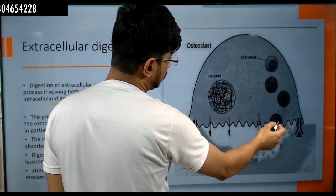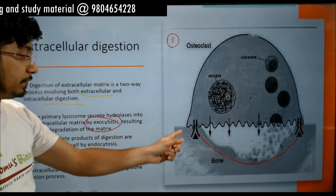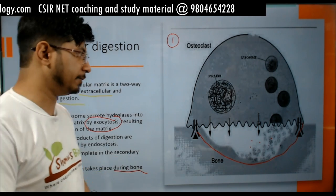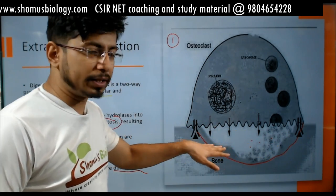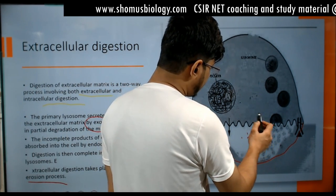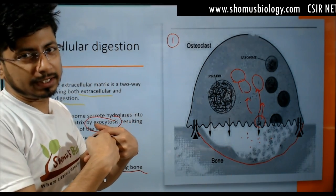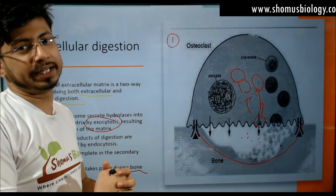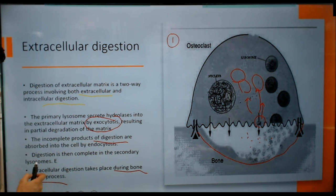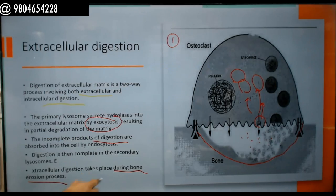The incomplete products of digestion are absorbed back into the cell by endocytosis and further digested inside. This extracellular digestion is a two-step process and is very common in bone erosion — over time, lysosomes release components that degrade bone structures. The debris are taken back by the cell, forming an endocytic vacuole that fuses with lysosomes for further breakdown.